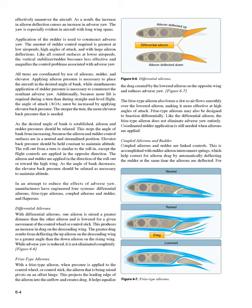With a frisee-type aileron, when pressure is applied to the control wheel or stick, the aileron being raised pivots on an offset hinge, projecting its leading edge into the airflow to create drag. This helps equalize the drag created by the lowered aileron on the opposite wing, reducing adverse yaw. The frisee-type aileron also forms a slot so air flows smoothly over the lowered aileron, making it more effective at high angles of attack. Like differential ailerons, frisee-type ailerons do not eliminate adverse yaw entirely, and coordinated rudder application is still needed.